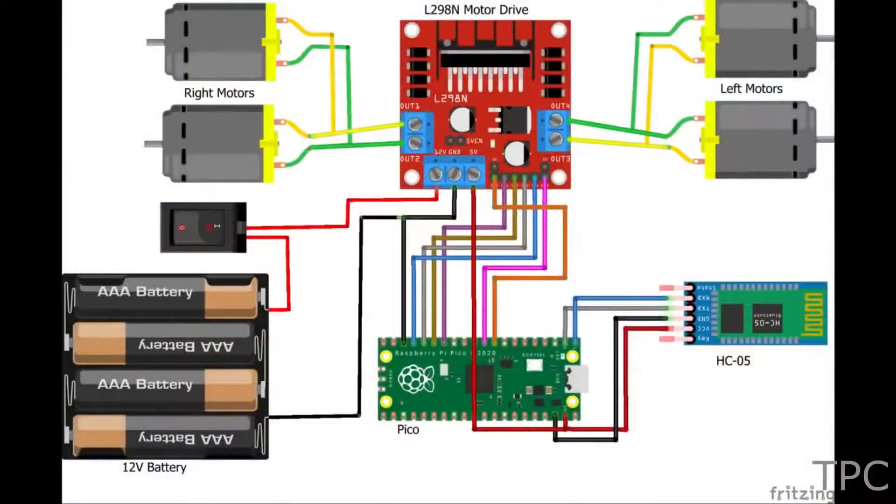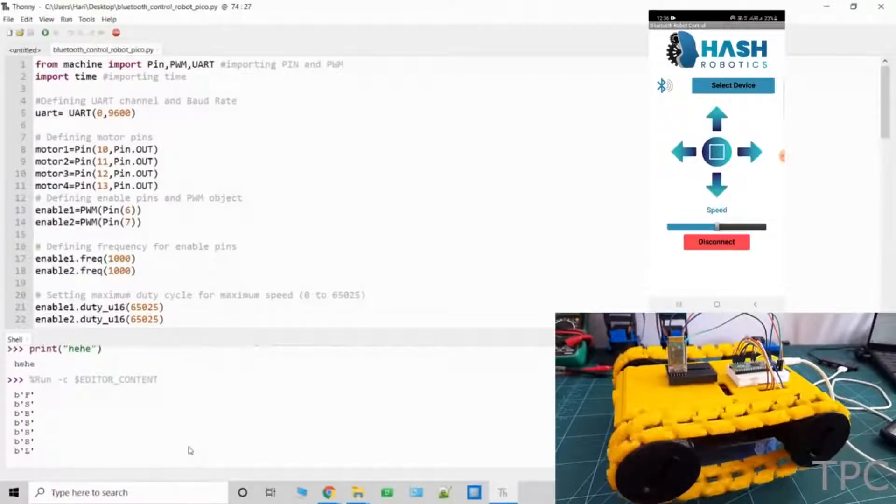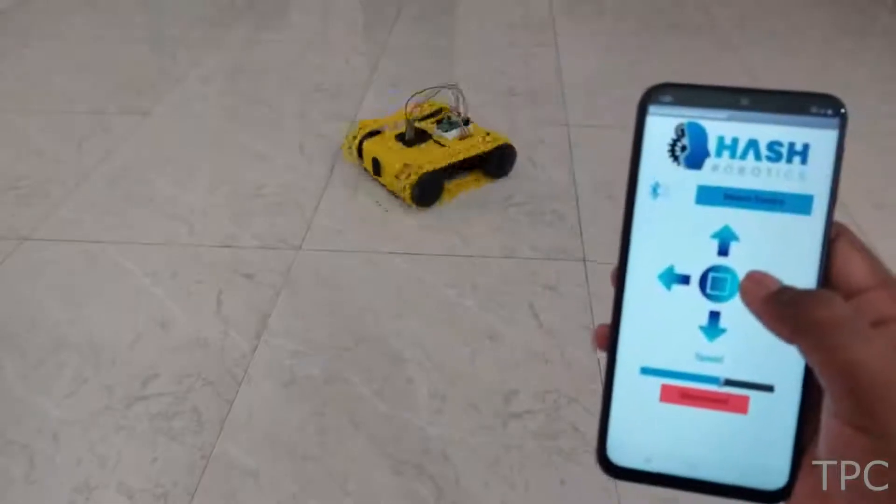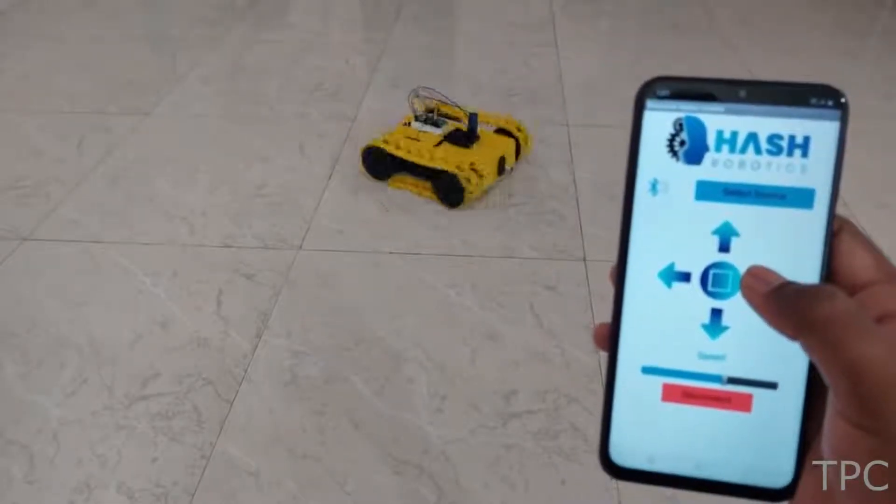Here is a quick glimpse of the circuit diagram of the robot. After uploading the code it's time to test the bot by pairing it with your smartphone. The tracks give smooth control to the bot and allow it to run in any direction.